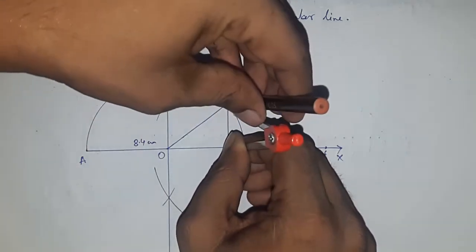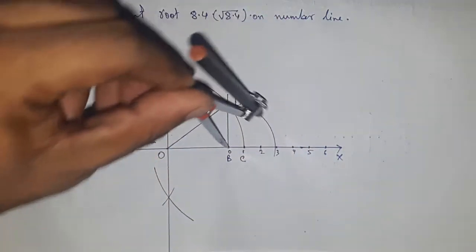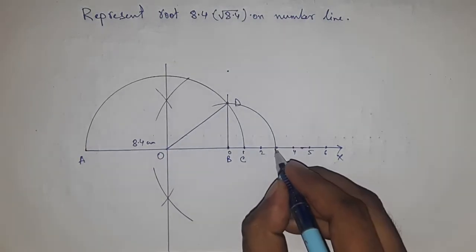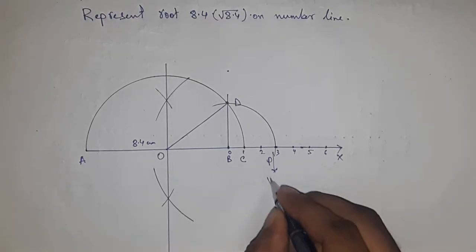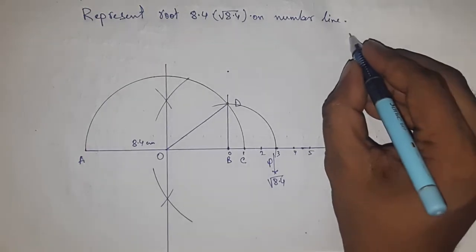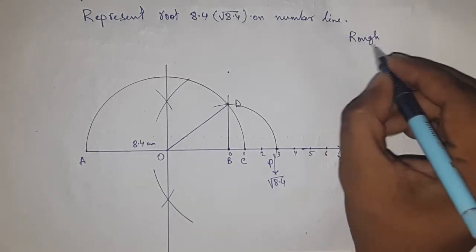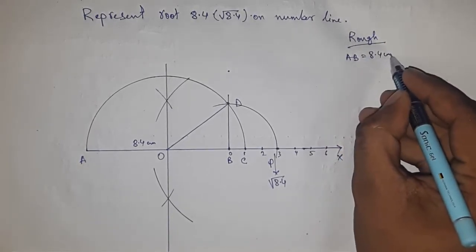Now taking the length BD with compass and drawing an arc which meets the number line at point P. And this is the representation of root 8.4 on the number line. Now we'll discuss the calculation roughly.